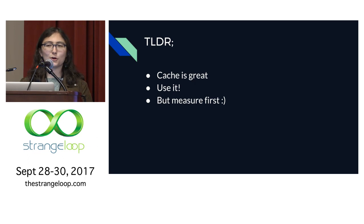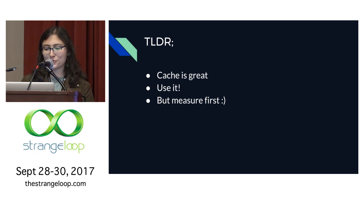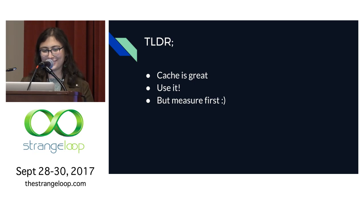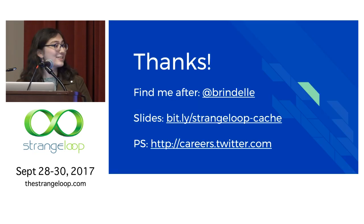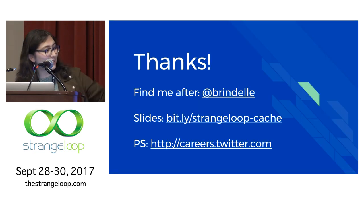If there's one thing to take away, it's that caching is kind of great. But first, you need to figure out what you're using it for. The strategies we use on the user service are designed for our particular problem space — their robustness is a direct consequence of knowledge earned from real failures. Go forth. Hopefully some of this is useful for your own service designs. But first — measure. Thank you very much.